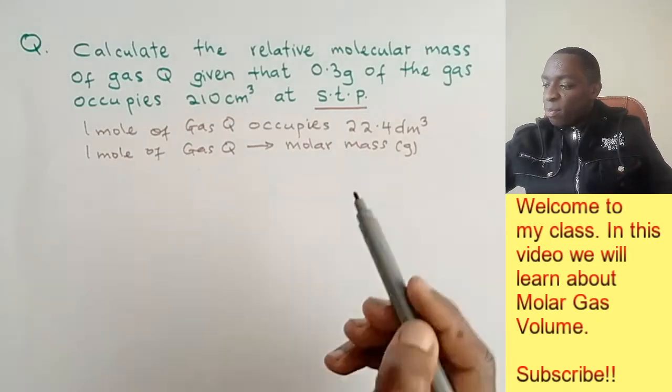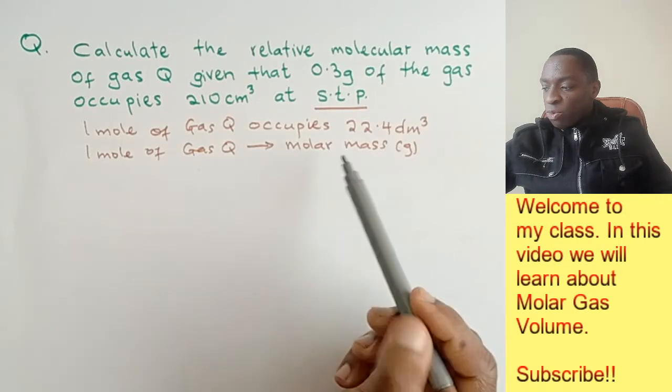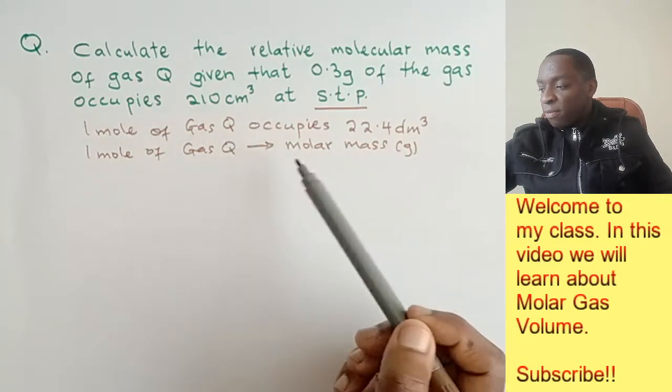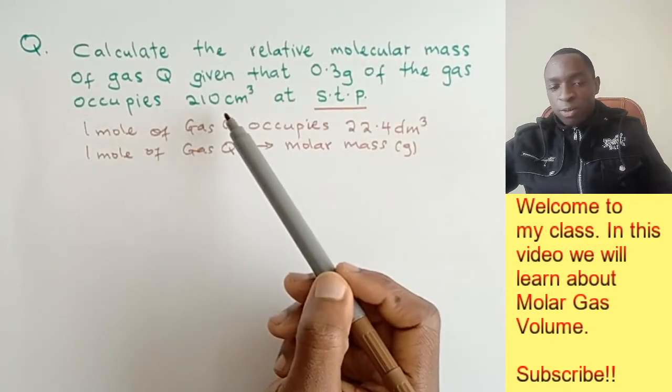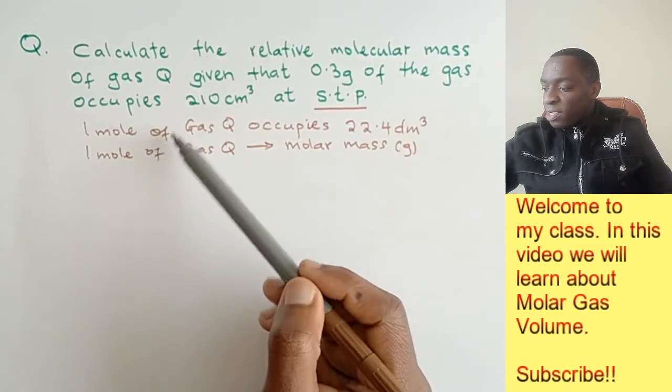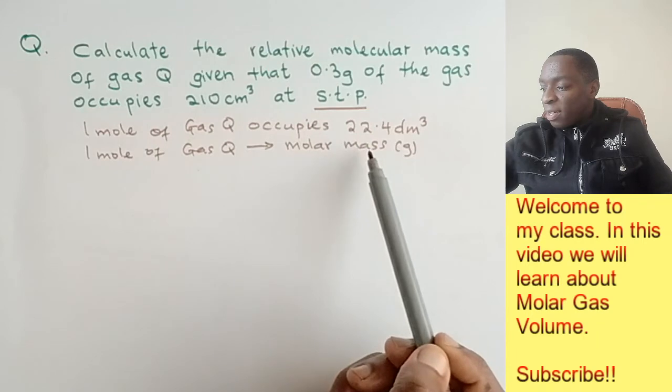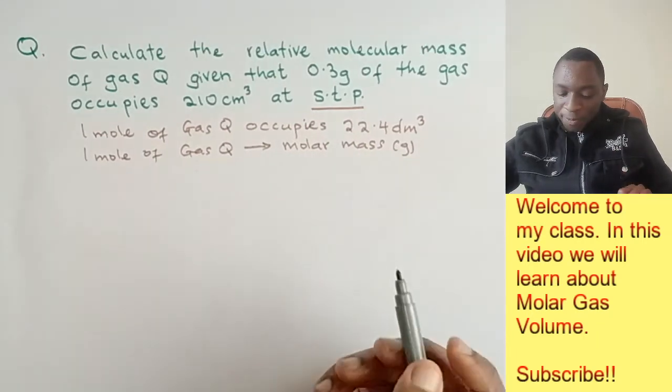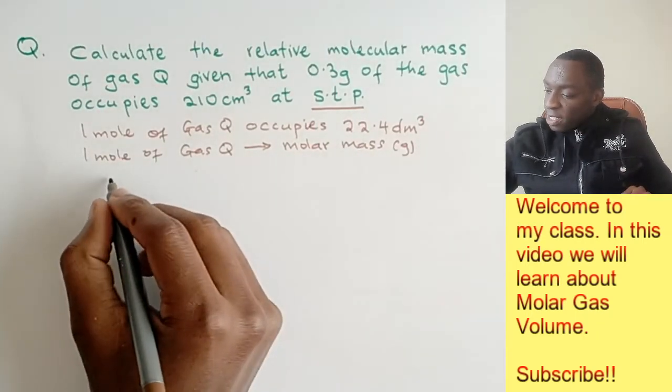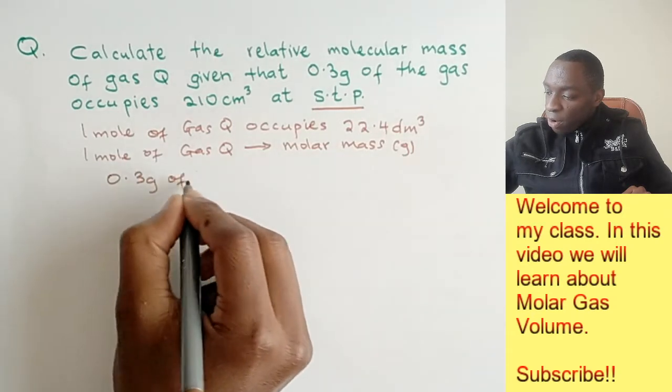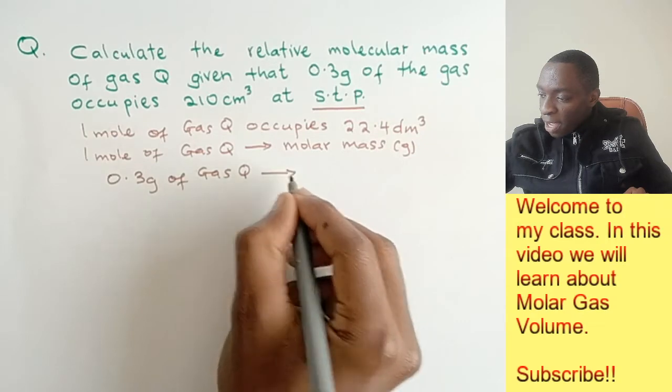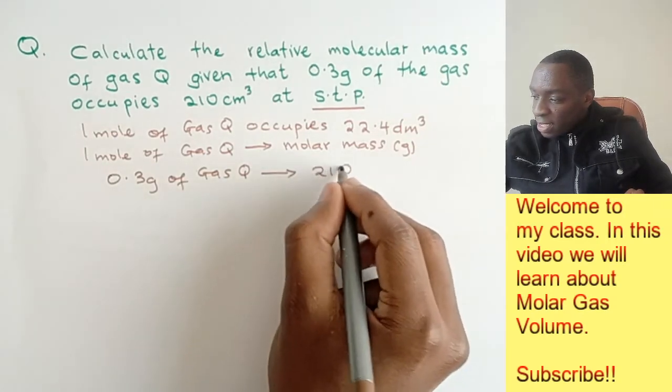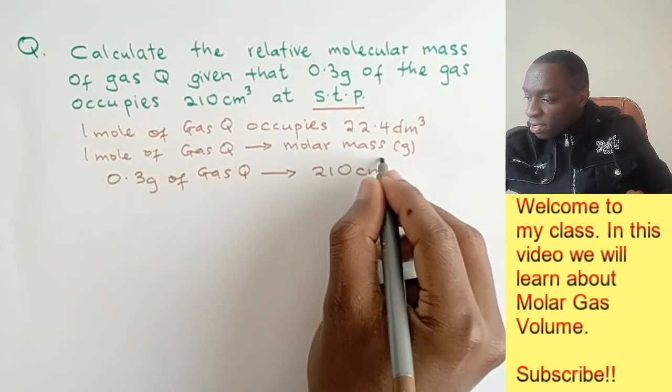We need to calculate this molar mass, but we don't have any of the values directly. We've been given the mass and the volume. Since 1 mole is related to both the volume and the molar mass, we can say that 0.3 grams of gas Q occupies 210 cm³.